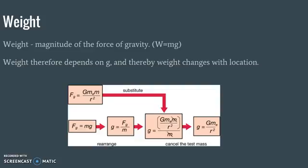This expression can be adapted for any body. If you plug in the mass of the Earth and the radius of the Earth as r, you get 9.8 m/s² — the gravitational field strength at Earth's surface. You can do the same for other planets or celestial bodies.